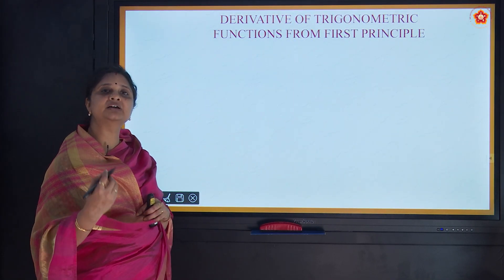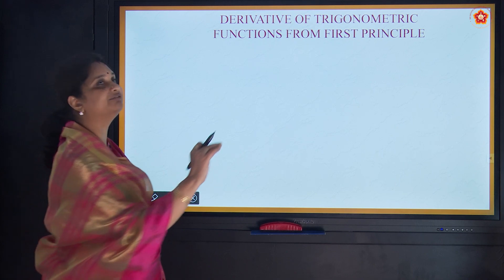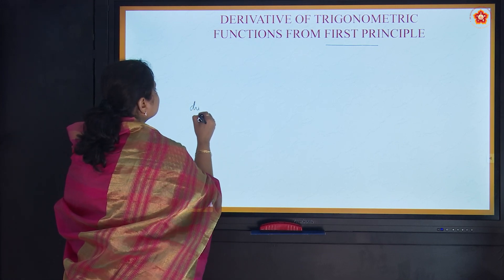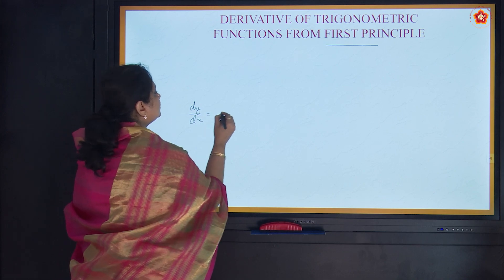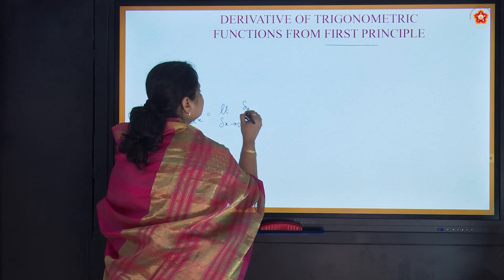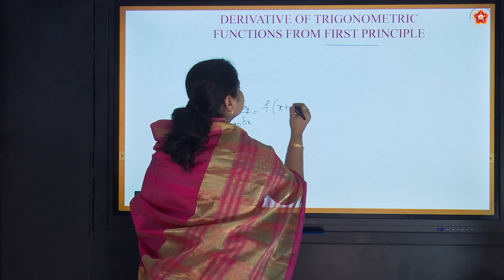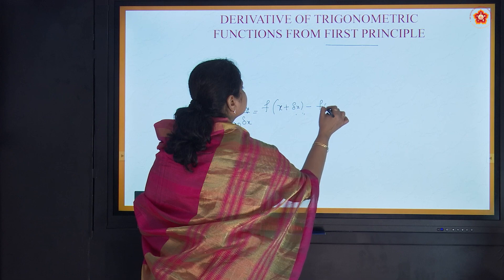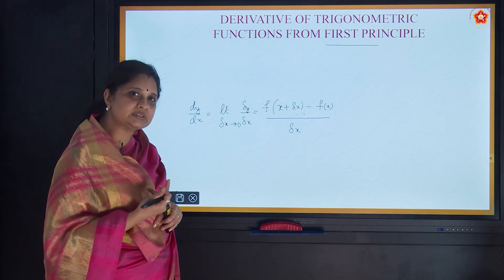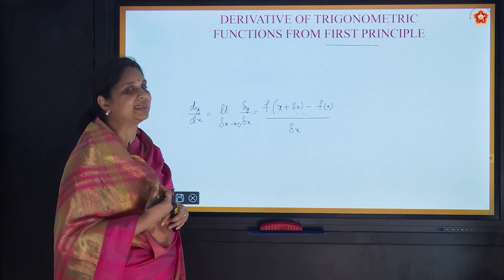Every time before we start using the formulae, we try to differentiate using the first principle. To give you a recap, dy/dx is equal to the limit as del x tends to 0 of del y by del x, which equals f(x + del x) minus f(x), all divided by del x. If you have any doubts, go back to our previous videos, learn it properly, make notes and then get back.